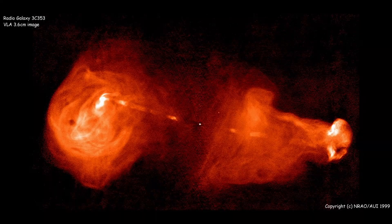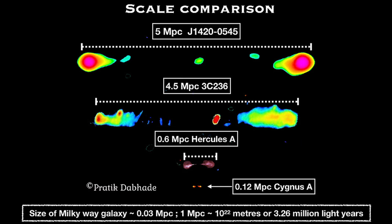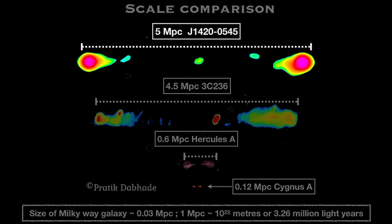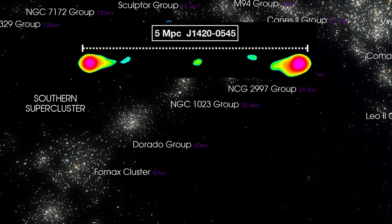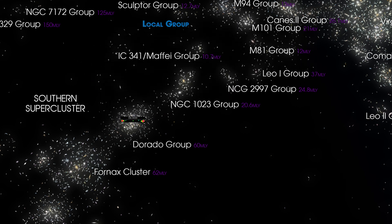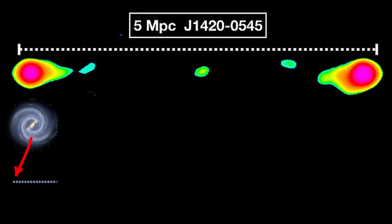Where these jets extend on the megaparsec scale they are called giant radio galaxies. These jets can stretch millions of times the size of the central galaxy and form hotspots at the end. These giant radio galaxies are so large that they are comparable to the size of galaxy clusters. For context, 30 Milky Way galaxies in line would be equivalent to a megaparsec.